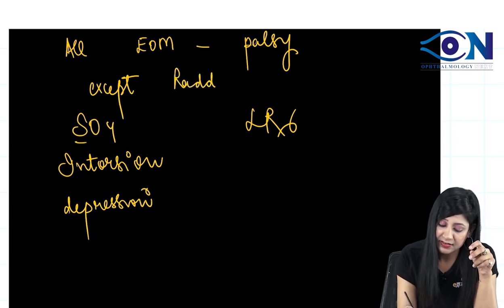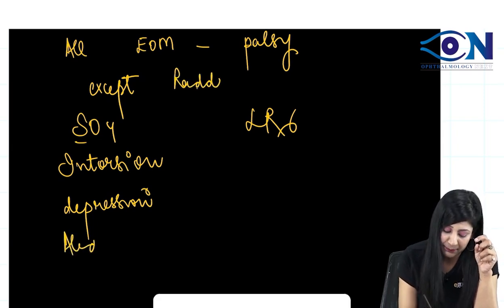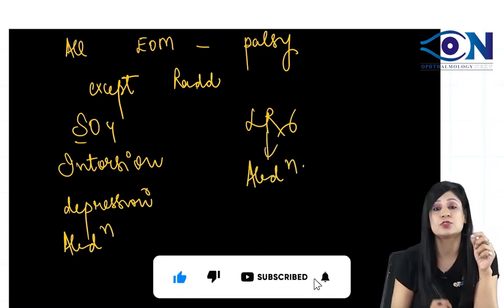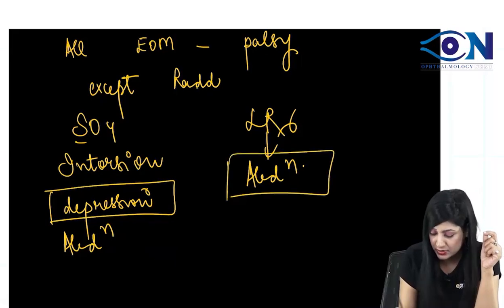Recti are adductors, so oblique will cause abduction. LR will also cause abduction. So if you see depression and abduction, I will be downward and outward.